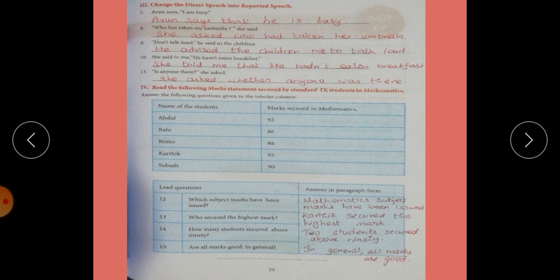Then eighth one. Who has taken my umbrella? She said. It is the interrogative type. She asked who had taken her umbrella. Then ninth one. Don't talk loud. He said to the children. He advised the children not to talk loud.